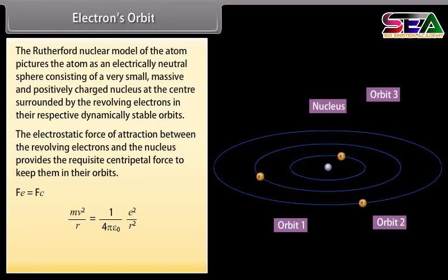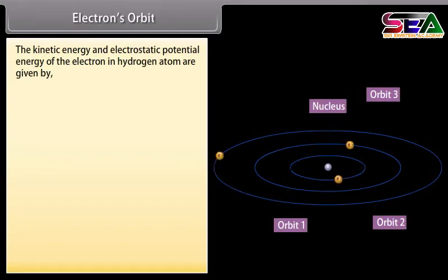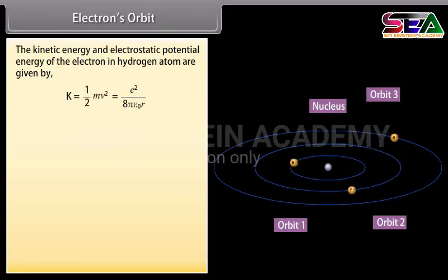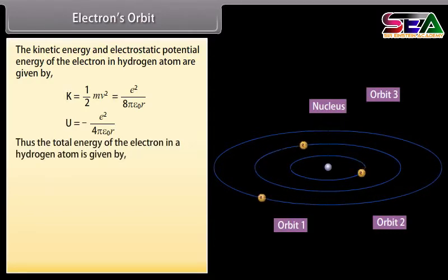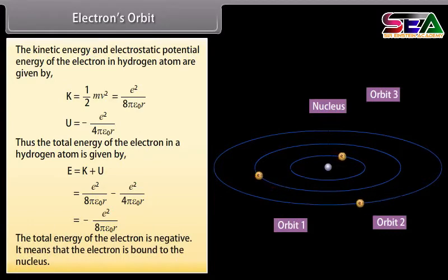We can write: R = E² / (4πε₀mv²). The kinetic energy and electrostatic potential energy of the electron in the hydrogen atom are given by K = ½mv² = E² / (8πε₀R), and U = −E² / (4πε₀R). Thus the total energy is E = K + U = −E² / (8πε₀R). The total energy of the electron is negative, meaning the electron is bound to the nucleus.